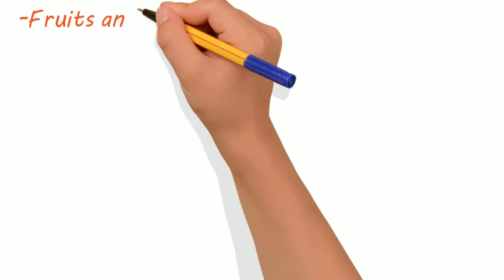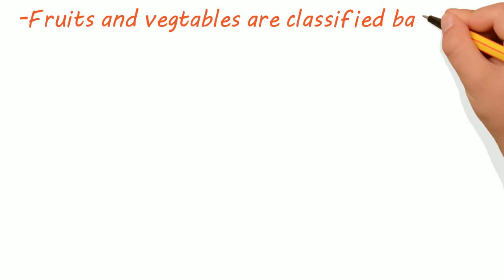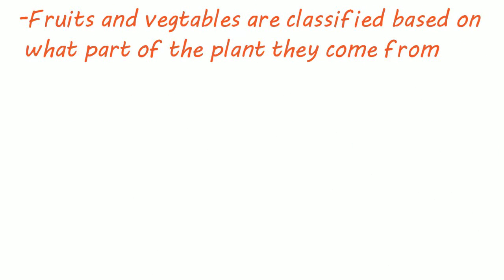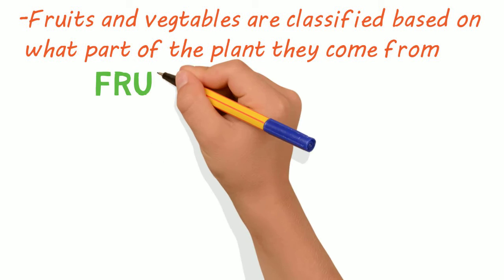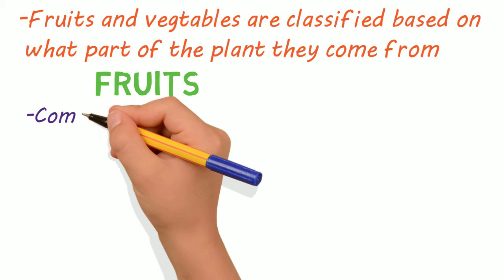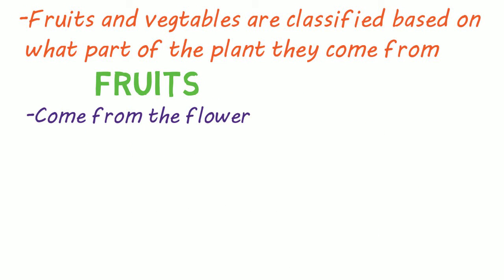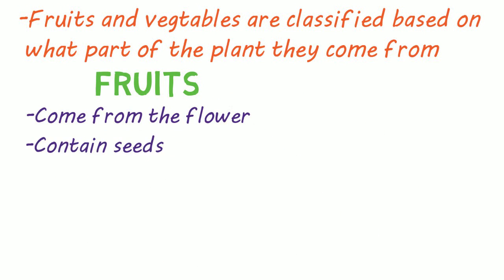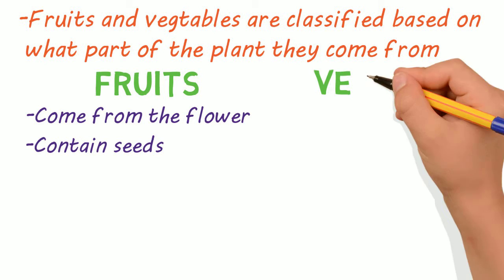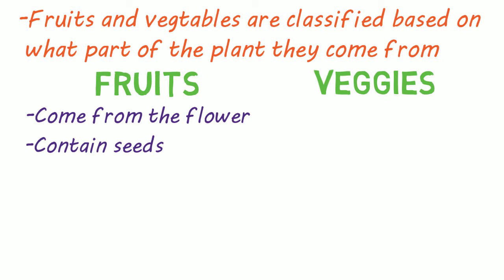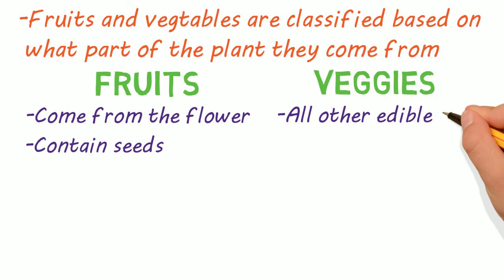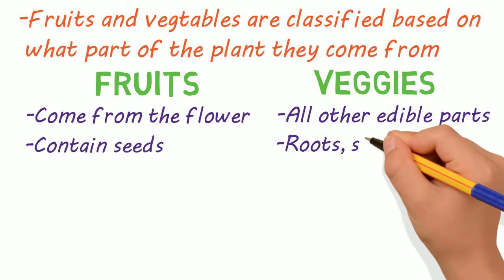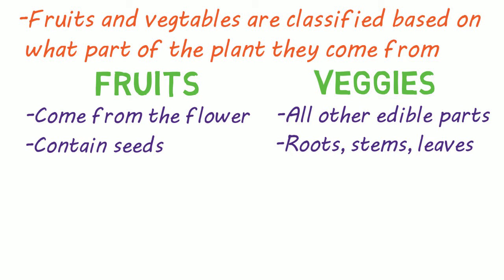Fruits and vegetables are classified based on what part of the plant they come from. Fruits form from the flower of the plant, usually the ovaries, and contain seeds. Vegetables are essentially any other edible part of the plant — these could be roots, stems, or leaves.